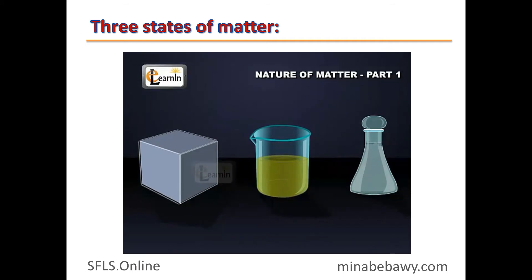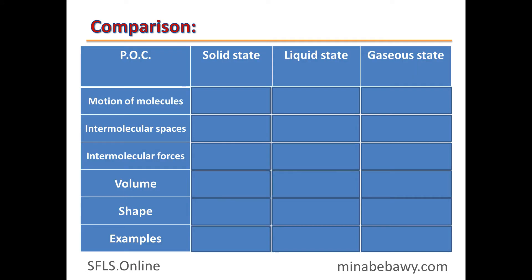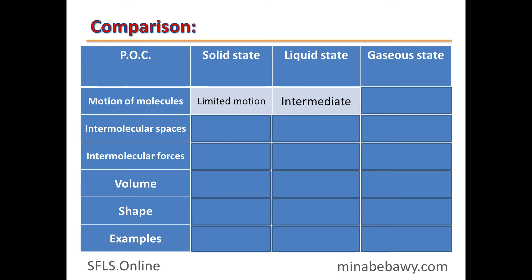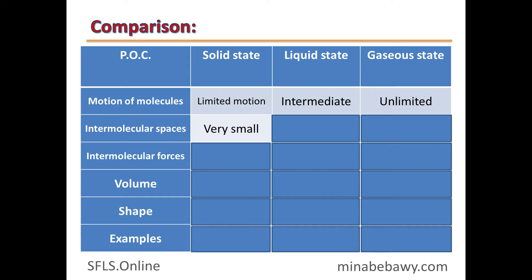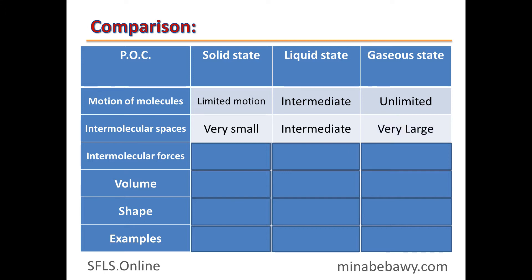This was a quick comparison between the three states of matter. Now let's compare them in a table. The first point is motion of molecules: in the solid state it is very limited; in liquids it is intermediate; in the gaseous state it is unlimited. Intermolecular spaces are very narrow in solids, intermediate in liquids, and very large in gases.